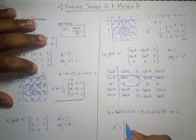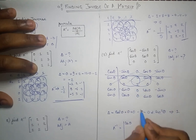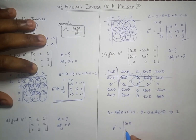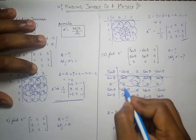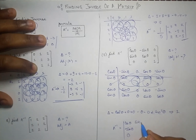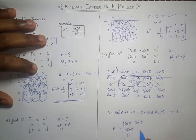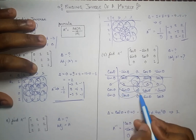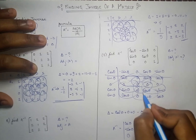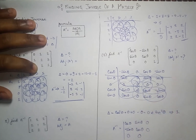The inverse equals 1 over 1, which is just 1, times the adjoint. Computing the minors: values are cos θ, cos θ, −sin θ, 0, then sin θ, 0, and cos θ, 0, 0, and finally cos²θ + sin²θ which equals 1. So the inverse of this trigonometric matrix is the adjoint itself.